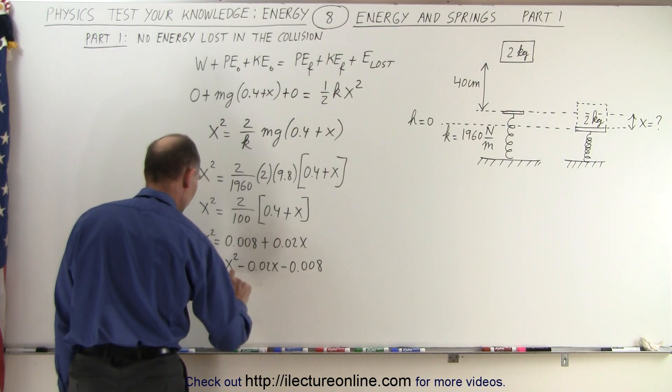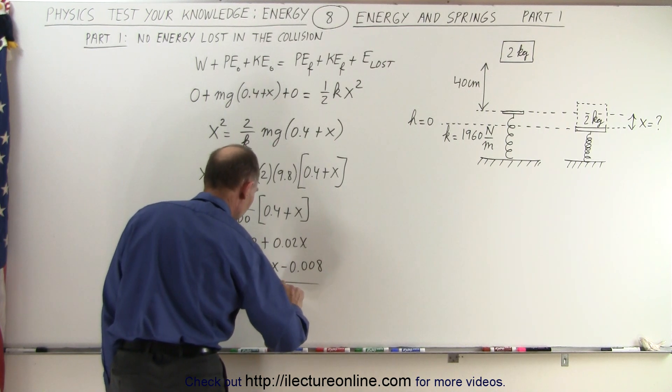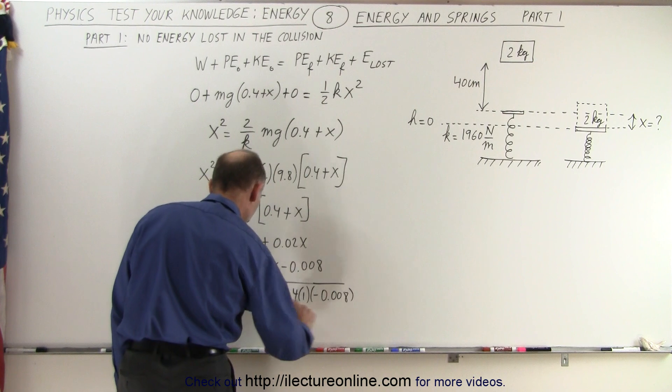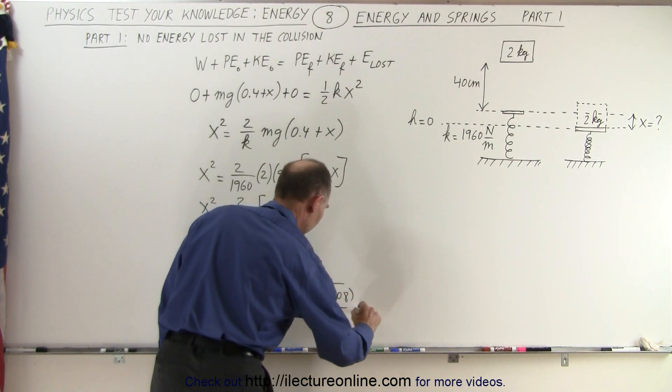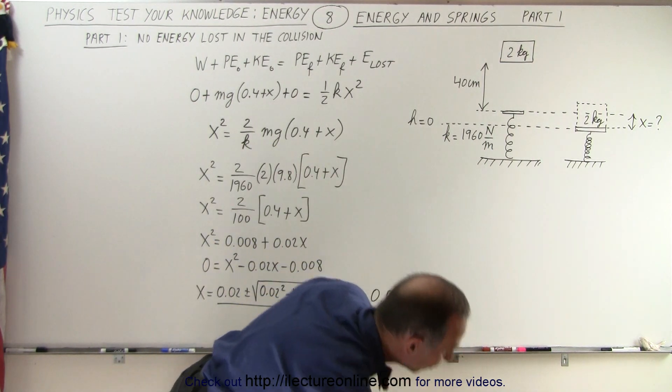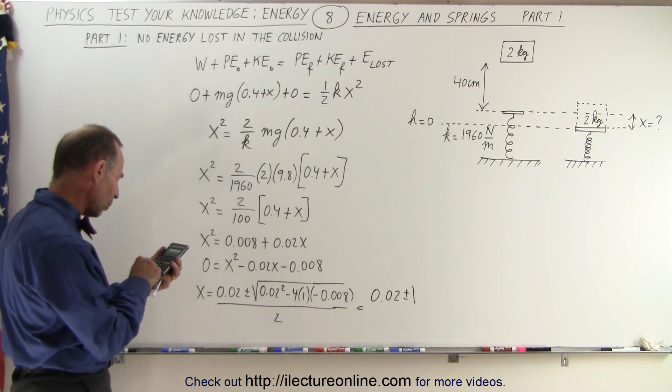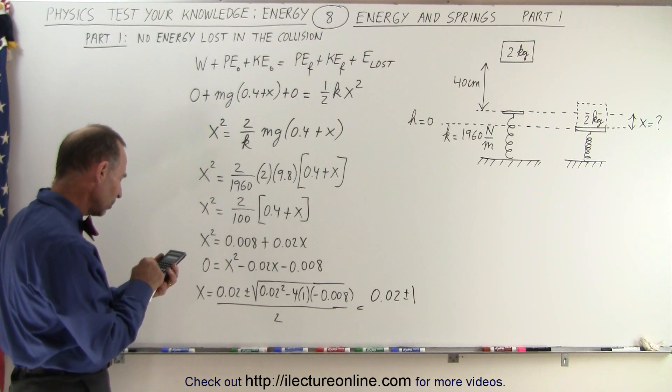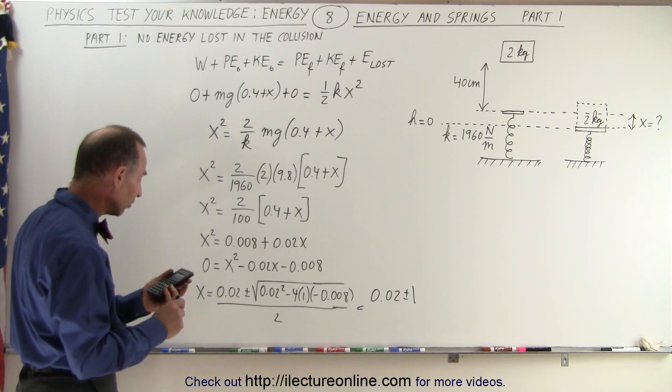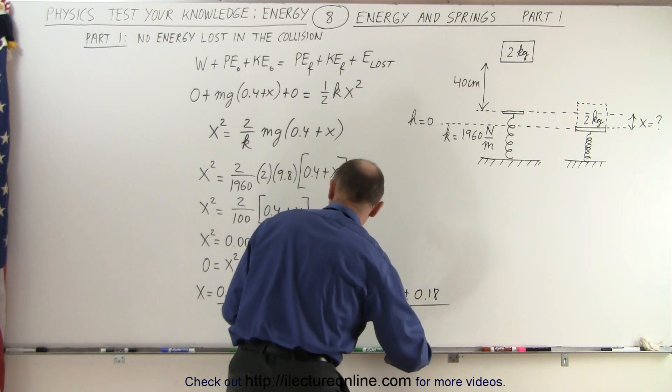So we can say that x is equal to minus b, which is 0.02, plus or minus the square root of 0.02 squared minus 4 times a times c, which is minus 0.008, all divided by 2a, which is 2. So this is equal to 0.02, plus or minus the square root of 0.0324, take the square root of that, which is 0.18. So this gives us plus or minus 0.18, all divided by 2.